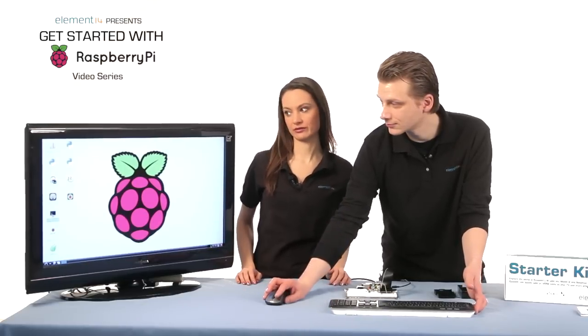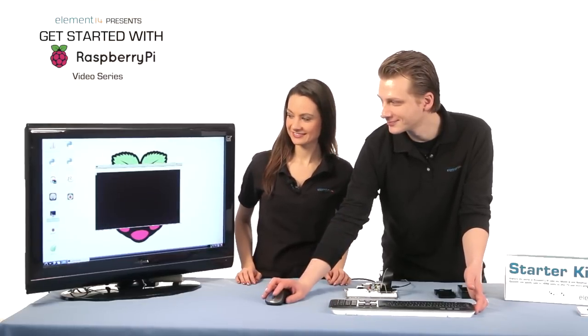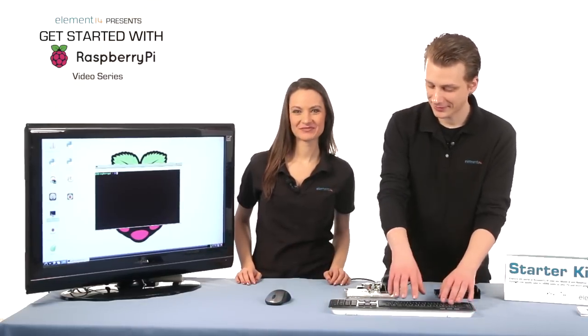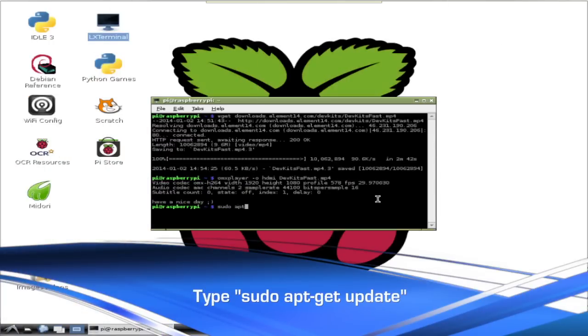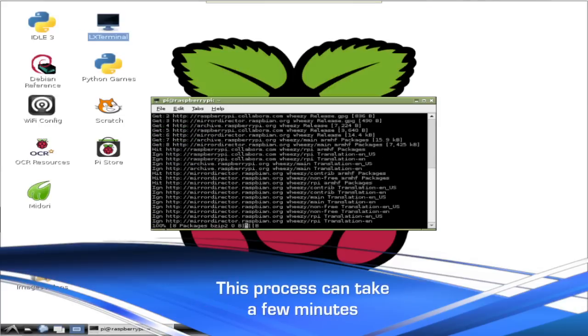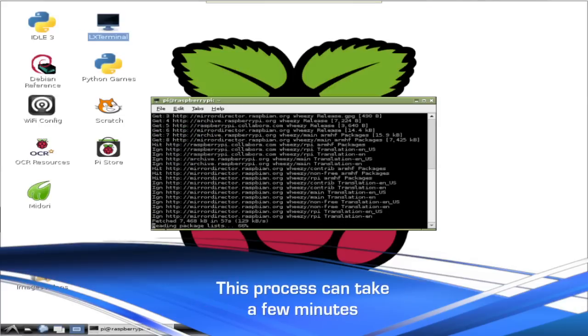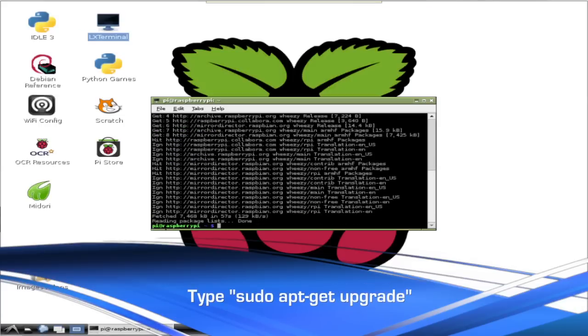As we mentioned in video 3, Getting Online, it's a good idea to update your operating system regularly, especially if you're starting a new project. So to do that, power up your Pi and make sure you're connected to the internet. Then open your LX terminal and type sudo. Ready? I'll wait for you. So you type sudo apt-get update and then you hit return. You type in sudo apt-get upgrade and then hit return.